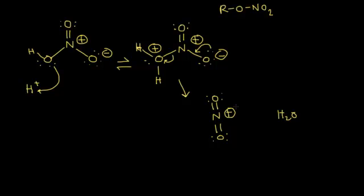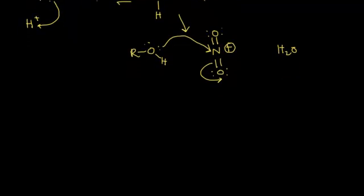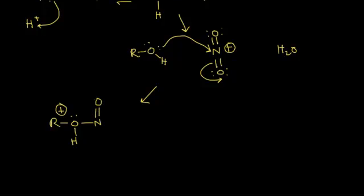When an alcohol molecule comes along, alcohols have lone pairs of electrons that can function as nucleophiles. The electron pair is attracted to the positively charged nitrogen, and nucleophilic attack kicks the electrons off onto the oxygen. Now we have our R group bonded to an oxygen, which is bonded to this nitrogen. This oxygen is also still bonded to a hydrogen, giving it a plus one formal charge, while the nitrogen has a double bond to one oxygen and a single bond to another oxygen with a negative one formal charge.